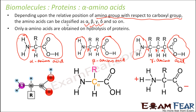Only alpha amino acids are obtained on hydrolysis of proteins. This is a very important point. Proteins are complex structures, and on hydrolysis the monomers — the compounds of which proteins are made — are formed. Please note that only alpha amino acids are formed on hydrolysis. No beta, no gamma, no delta — only alpha amino acids.